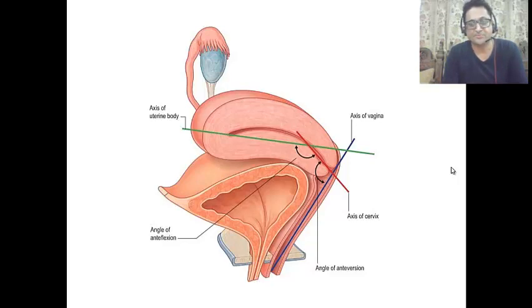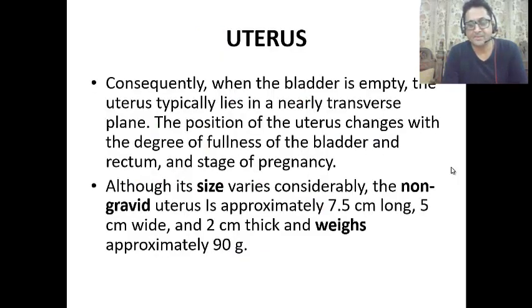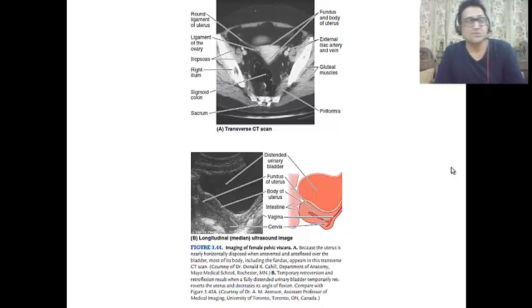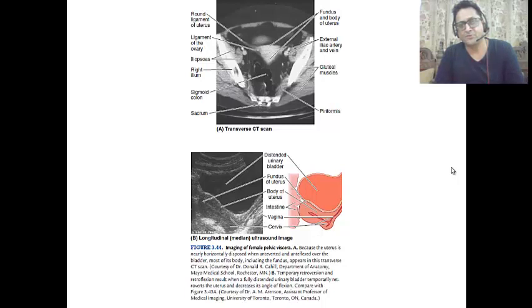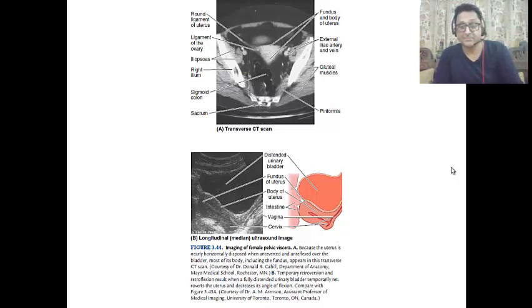These angles can change — when the uterus becomes retroflexed and retroverted. A CT scan of the uterus can show the anteverted and antiflexed position, which is almost horizontal, while in the standard full-bladder position the uterus becomes retroverted and retroflexed.